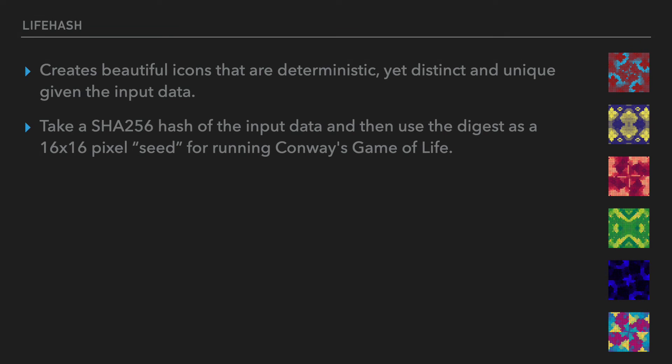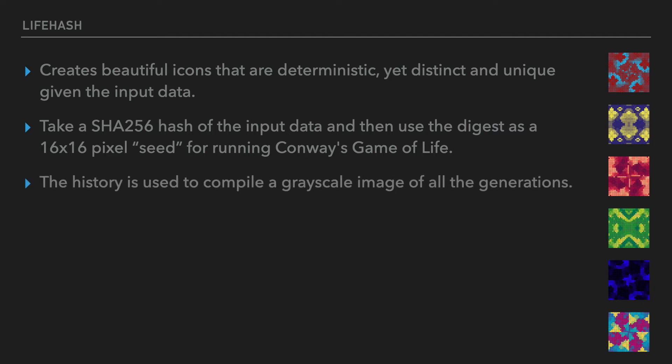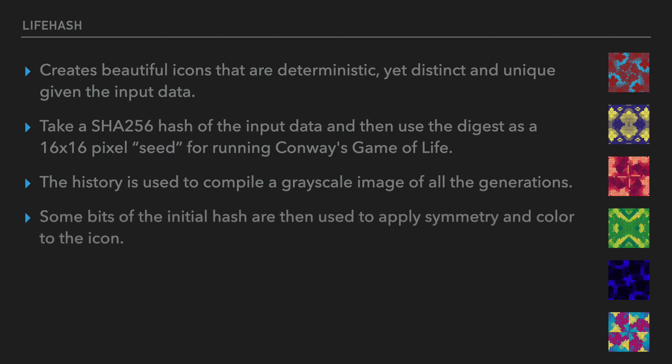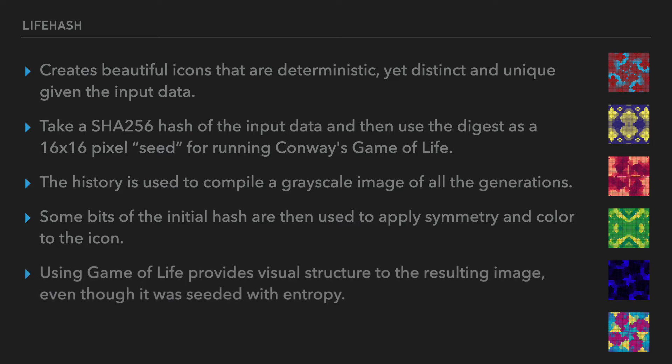We use our 16 by 16 seed to play Conway's Game of Life until the pattern stabilizes or repeats. This gives us a unique history of the seed's evolution that is much more than just the pattern we end up with. Some of the bits of the initial digest are then used to apply symmetry and color to the icon. Adding symmetry and color makes the resulting images both more recognizable and more beautiful. Using Conway's Game of Life adds a kind of organic visual structure to the resulting image, even though the digest we started with was essentially random.